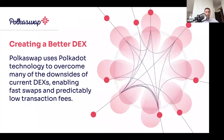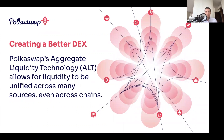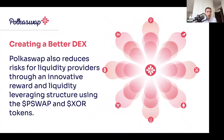To create a better DEX, in PokuSwap we've done quite a lot of work fixing these problems. First, we use Parity Substrate as the blockchain basis, so transactions are much faster and much cheaper — I'll show you the product in a few minutes. We can also combine liquidity from multiple exchanges using aggregate liquidity technologies, where you get price quotes from many different liquidity sources and execute against them. We've also done a lot of innovation with the tokenomics of XOR and PSWAP tokens.